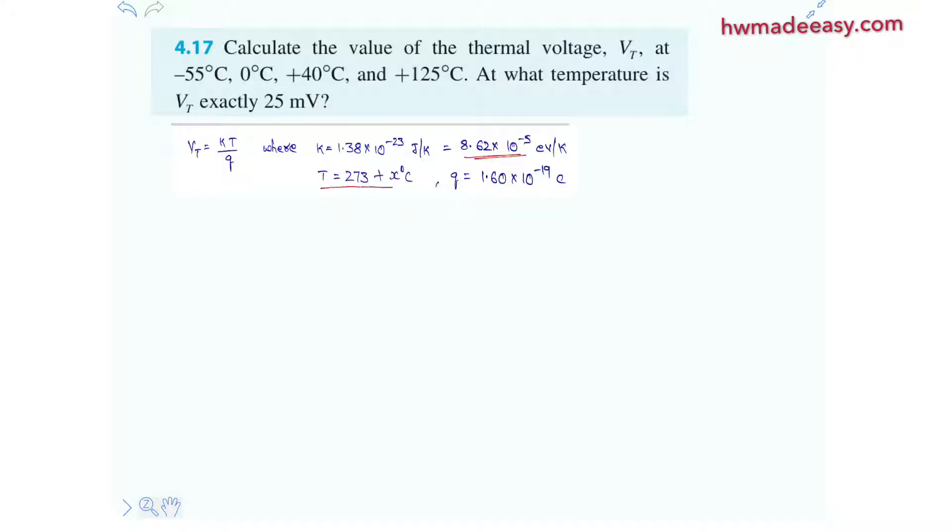So we know that T is 273 plus the degree Celsius will give you the temperature in Kelvins and Q is nothing but the charge of electron, Q is 1.6 multiplied with 10 to the power of minus 19 coulombs.